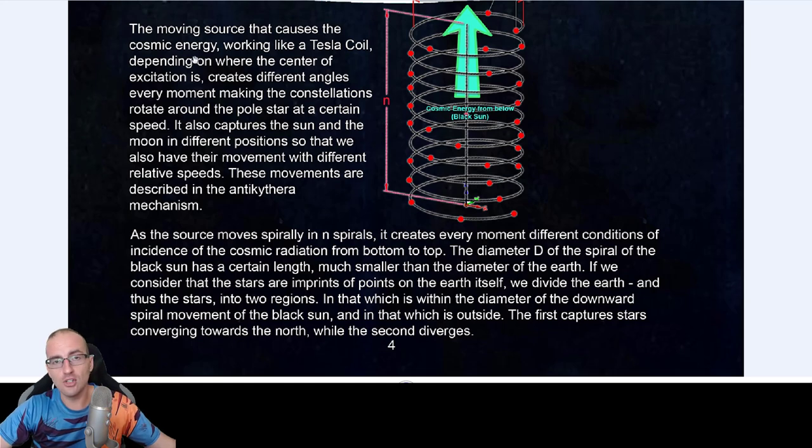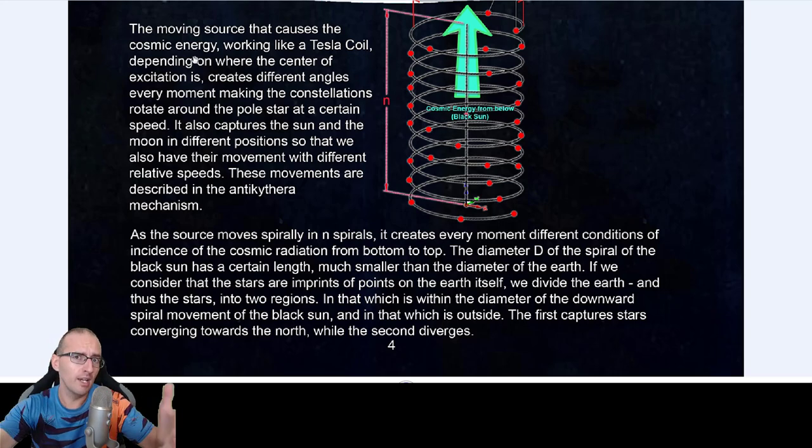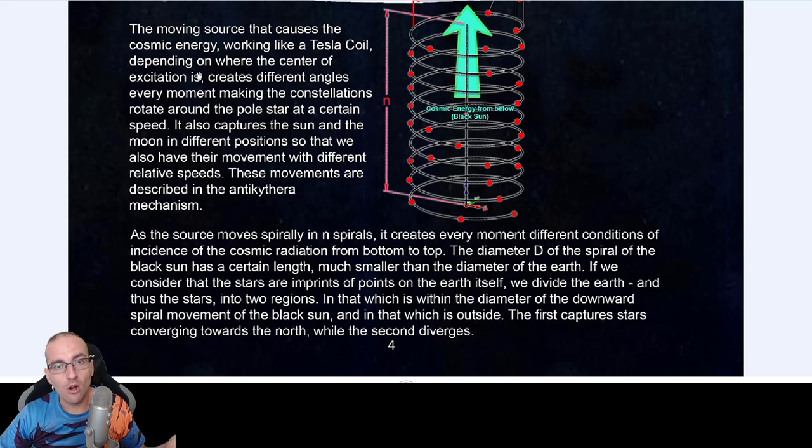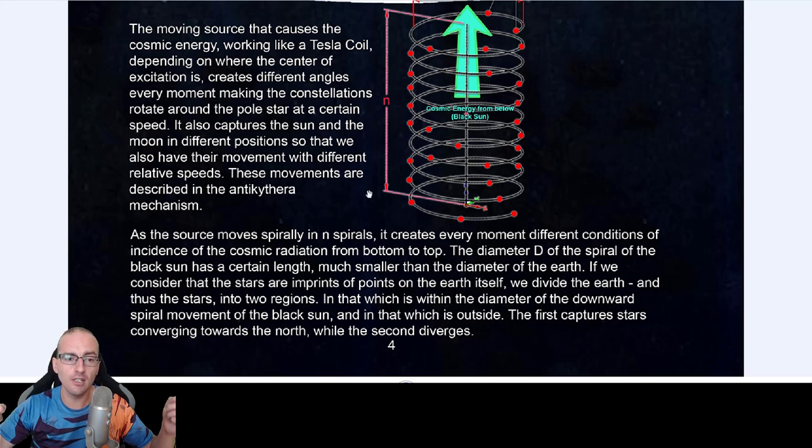The moving source that causes the cosmic energy, call it electromagnetic energy. Cosmic is just the way that he decided to choose. I like it but in case you don't like it, it's just electromagnetic because even you are electromagnetic and your soul is electromagnetic. This moving source works like a Tesla coil. Nikola Tesla didn't invent anything, he just knew all this. Depending on where the center of excitation is, because it's vibration and moves, it creates different angles every moment making the constellations rotate around the pole star, Polaris, at a certain speed. It also captures the sun and the moon, positive and negative energy, in different positions so that we also have their movements with different relative speed and angle of incidence because the sun and the moon are electromagnetic, they're not physical. These movements are described in the Antikythera mechanism.